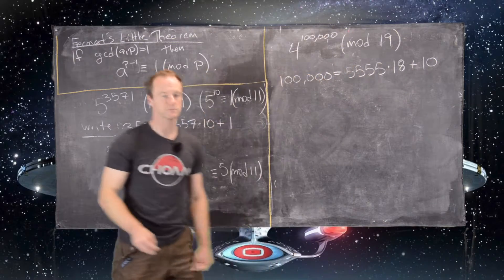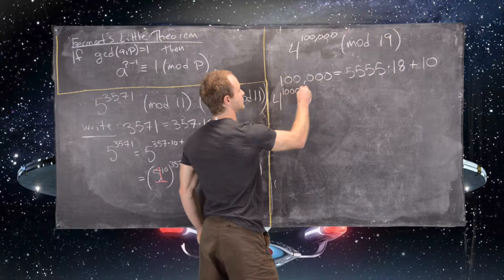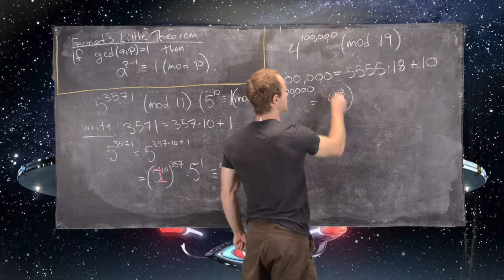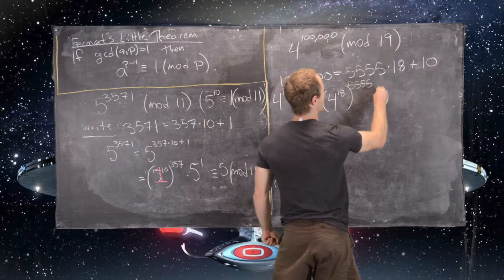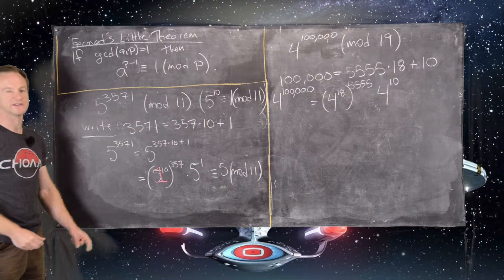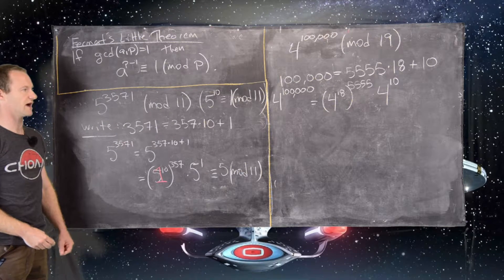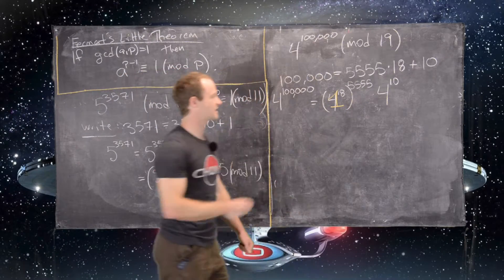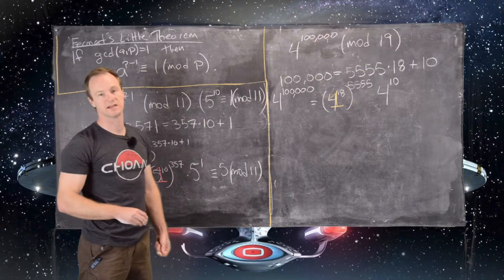So we have that. So that means we can write 4 to the 100,000 as 4 to the 18 to the 5,555 times 4 to the 10. Again, using the same strategy as we did here, but I just skipped a couple of the very simple steps where we used our exponent rules. And then again, we know that 4 to the 18 is congruent to 1 mod 19 by Fermat's Little Theorem. 18 is 1 less than 19.